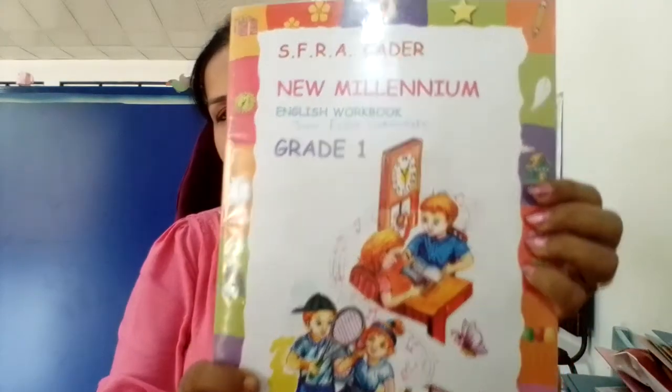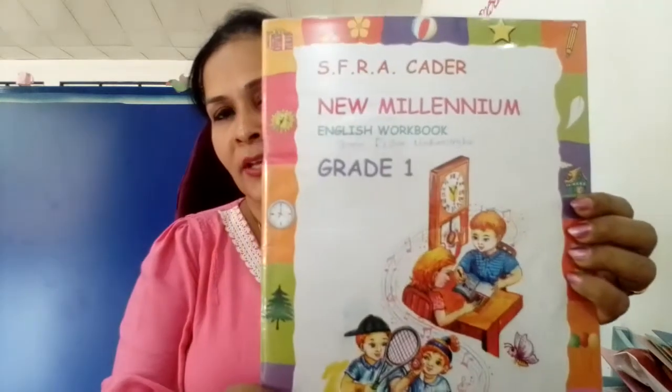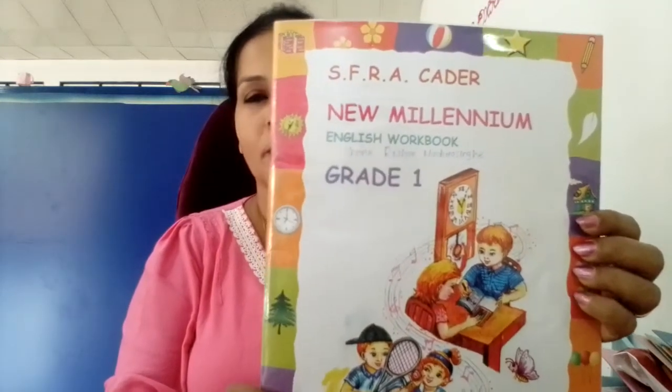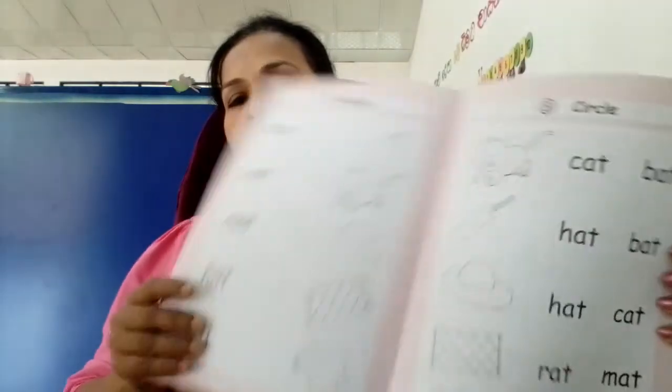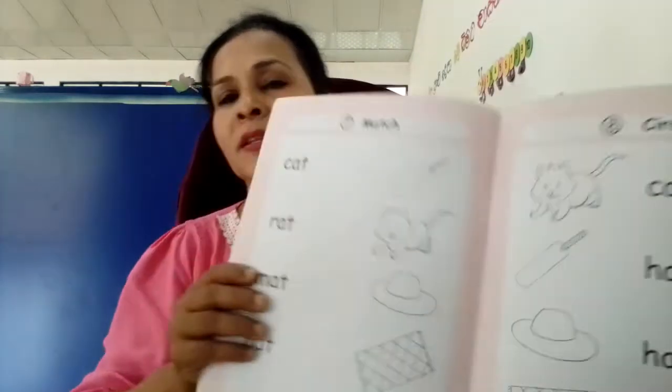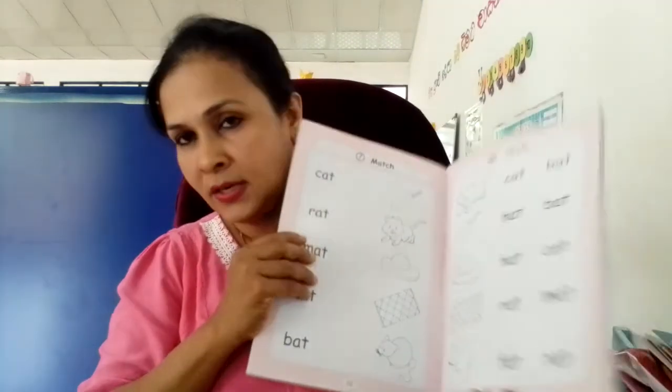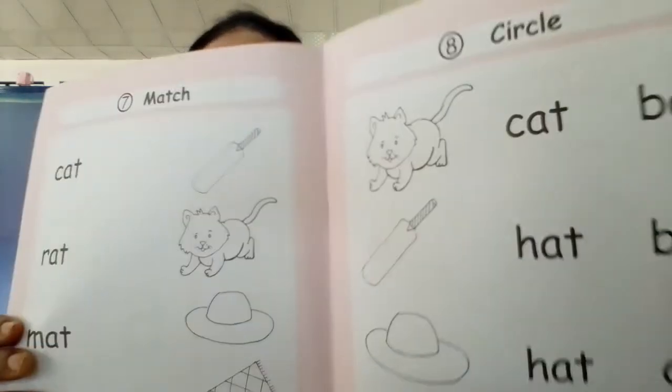Now take this book. This is our workbook. Turn to page number 23 and 24. I think you have already done these two pages according to the last lesson.